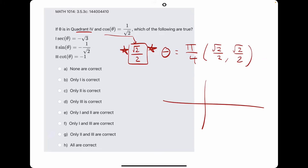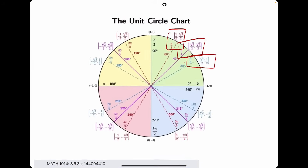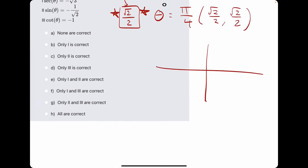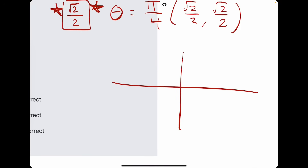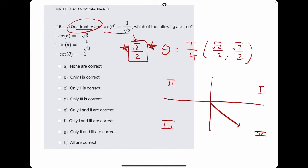So they're talking about the pi over 4 angle that is in quadrant 4. Pi over 4 is always the angle halfway between the quadrants — so pi over 4, 3 pi over 4, 5 pi over 4, and 7 pi over 4. So 7 pi over 4 is the pi over 4 angle in quadrant 4. The quadrants are 1, 2, 3, and 4, so in quadrant 4 we are dealing with 7 pi over 4.